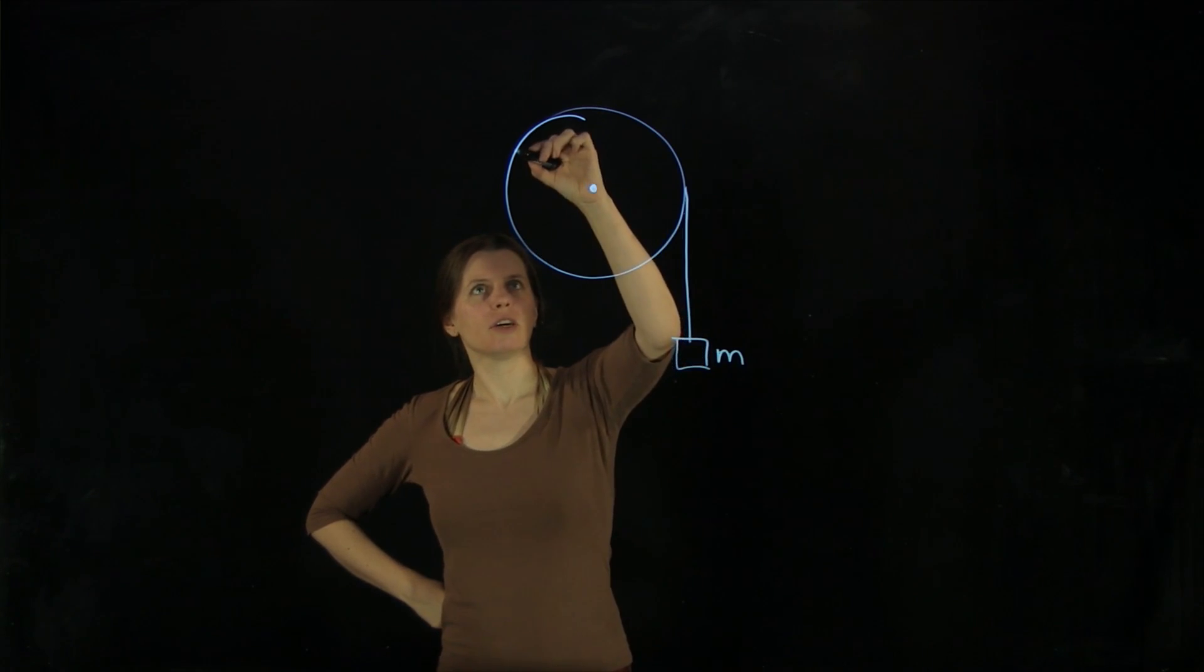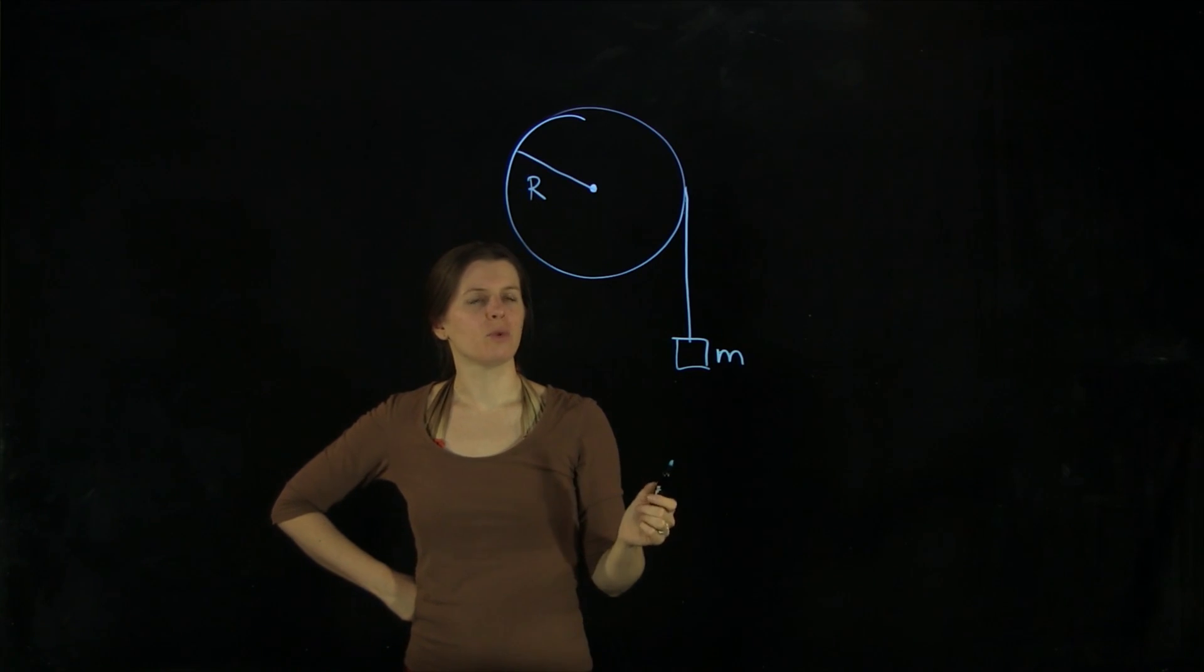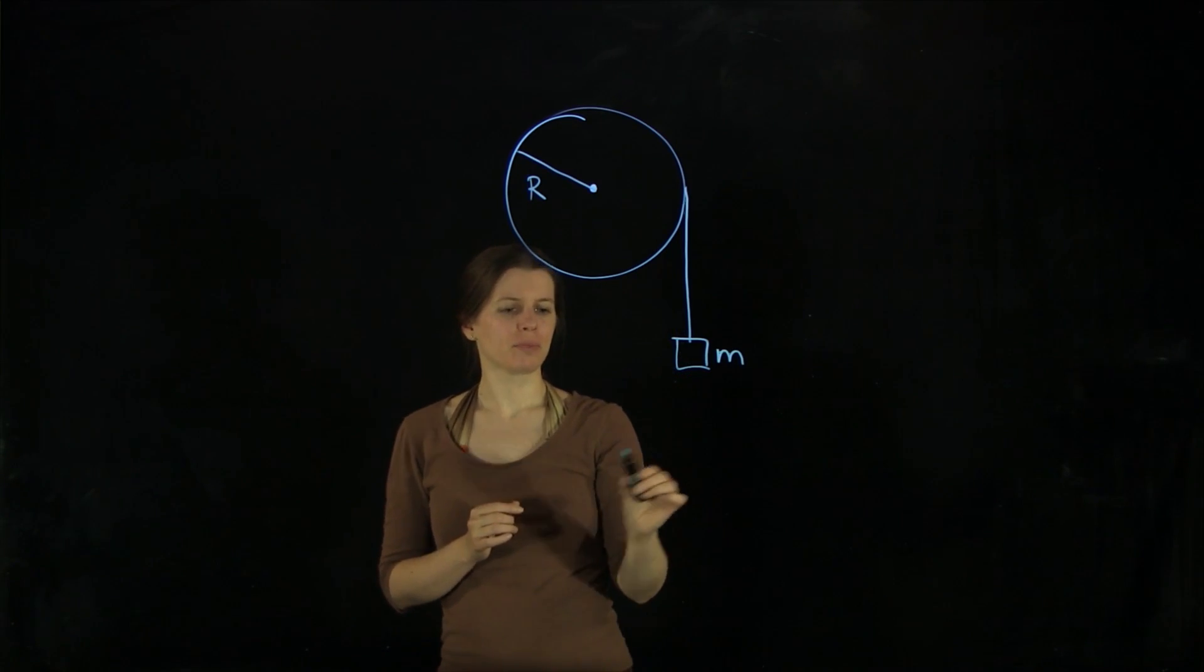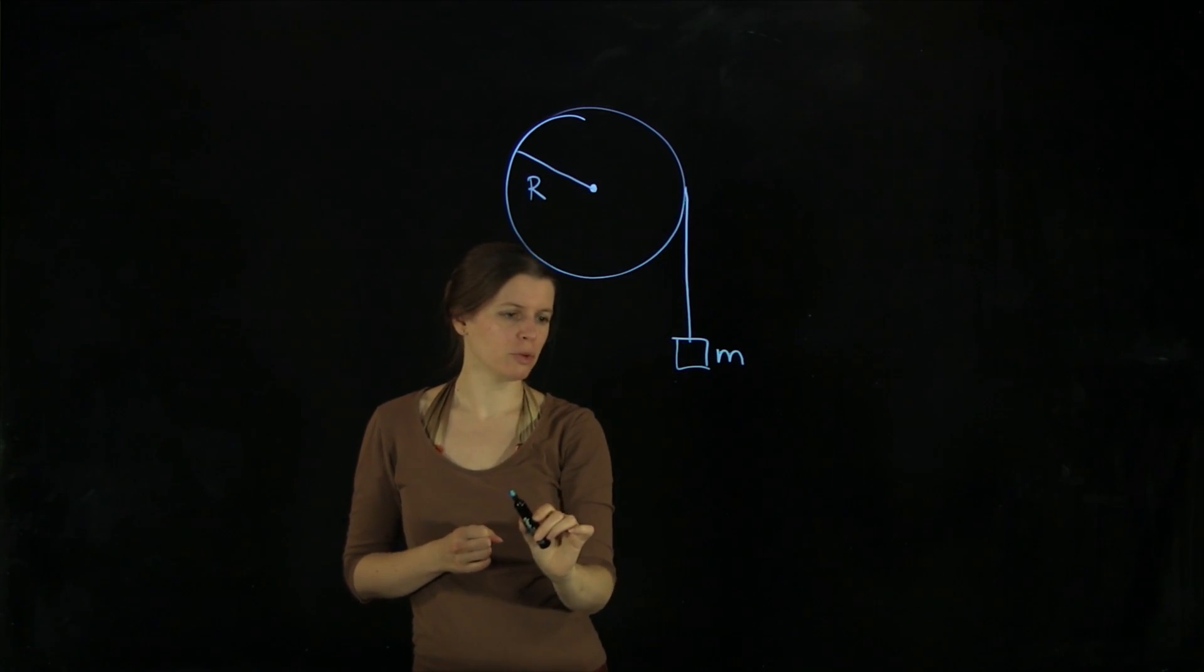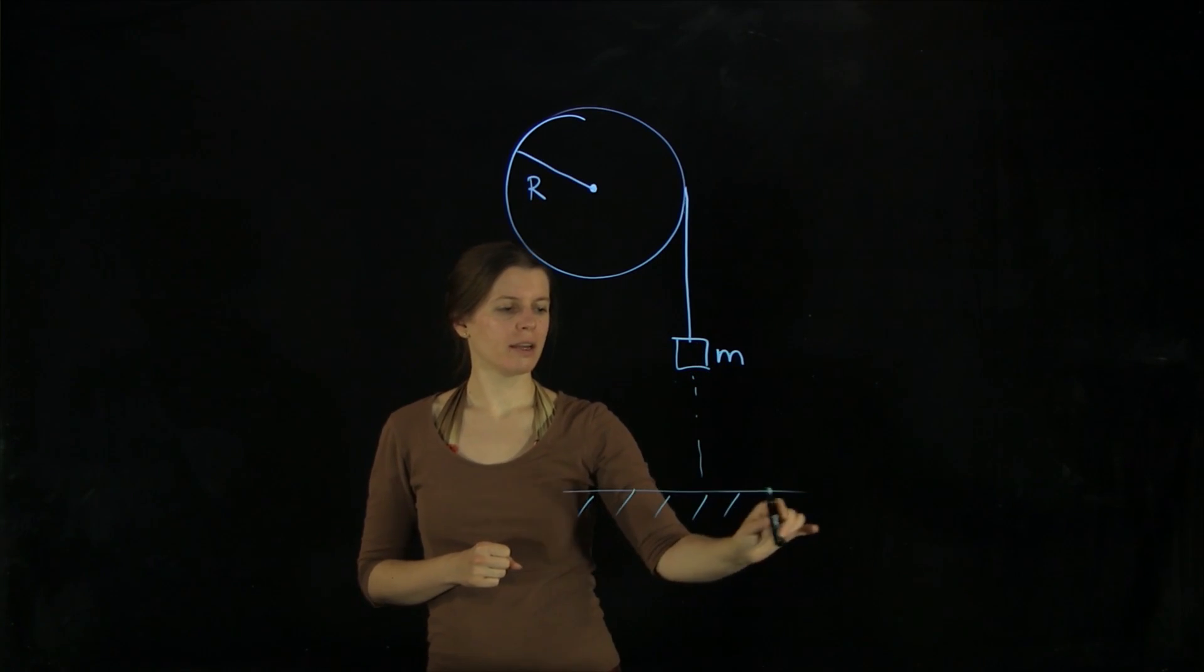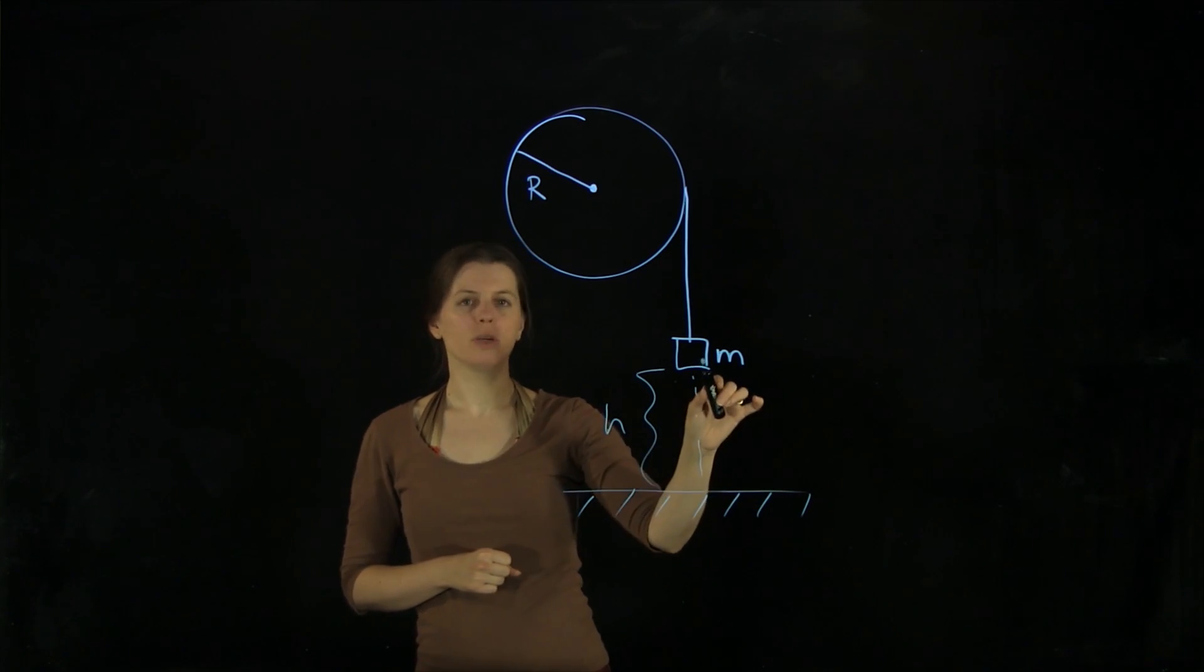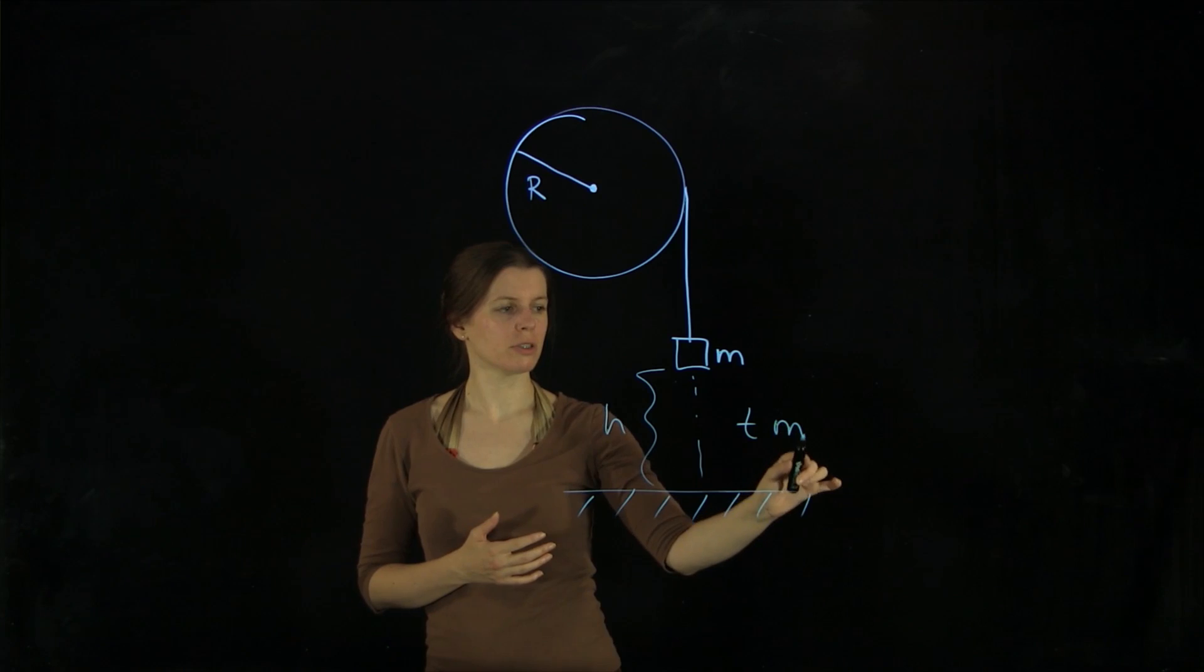Our disk here has a radius r, and we now want to know in a little experiment what the moment of inertia is of this disk, and what we have to do is we have to drop this mass to the ground, and we need to measure what height is here, and we need to measure how long it takes to drop, so we need to measure t.